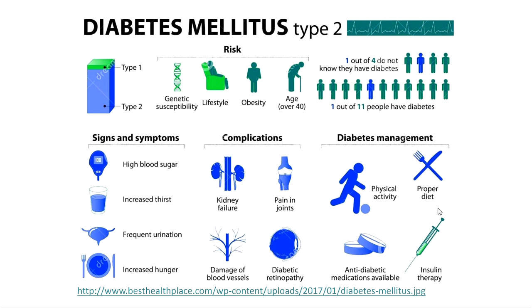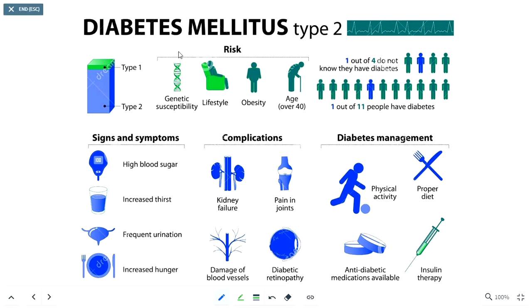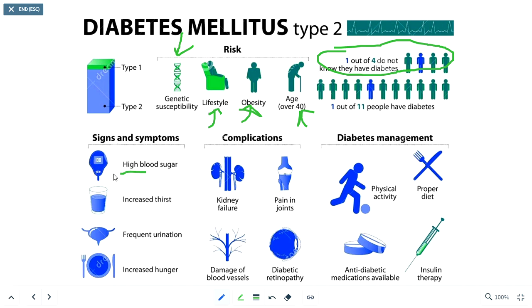Risk factors for type 2 diabetes include genetic predispositions, obesity, and old age. Twenty percent of people with type 2 diabetes do not know they have it, and about nine percent of the U.S. population has diabetes. Symptoms include high blood sugar and, as sugar enters the urine, increased osmolarity of the urine causes more water to build up there, resulting in more frequent urination and increased thirst.